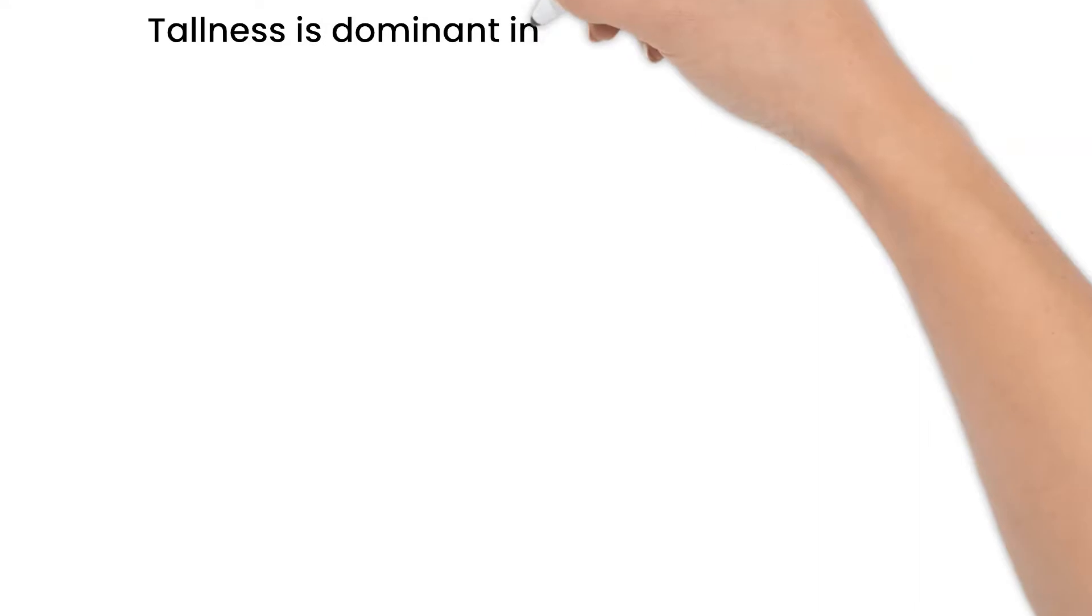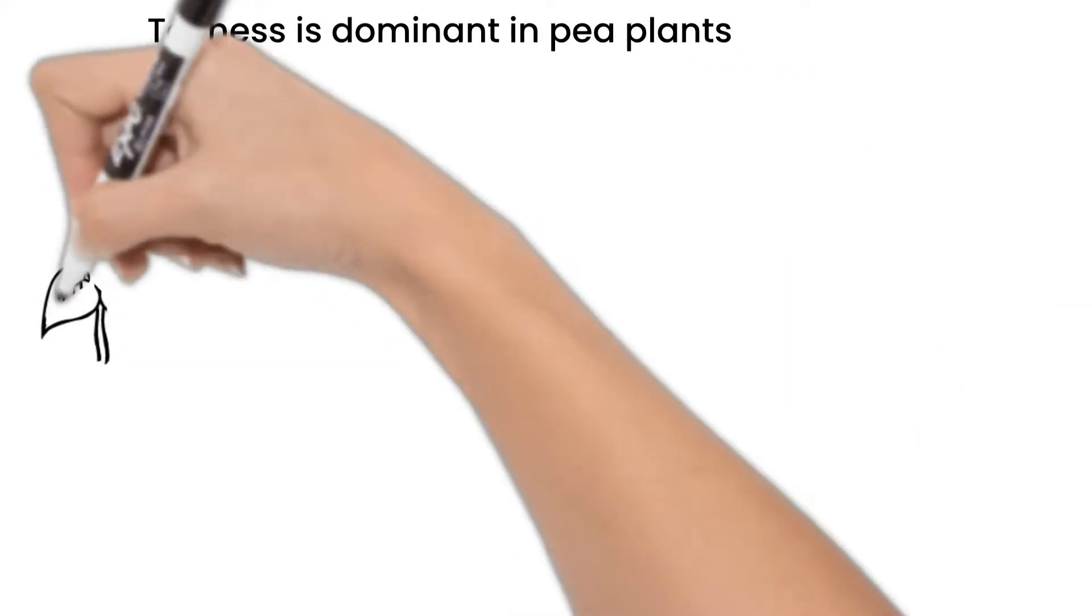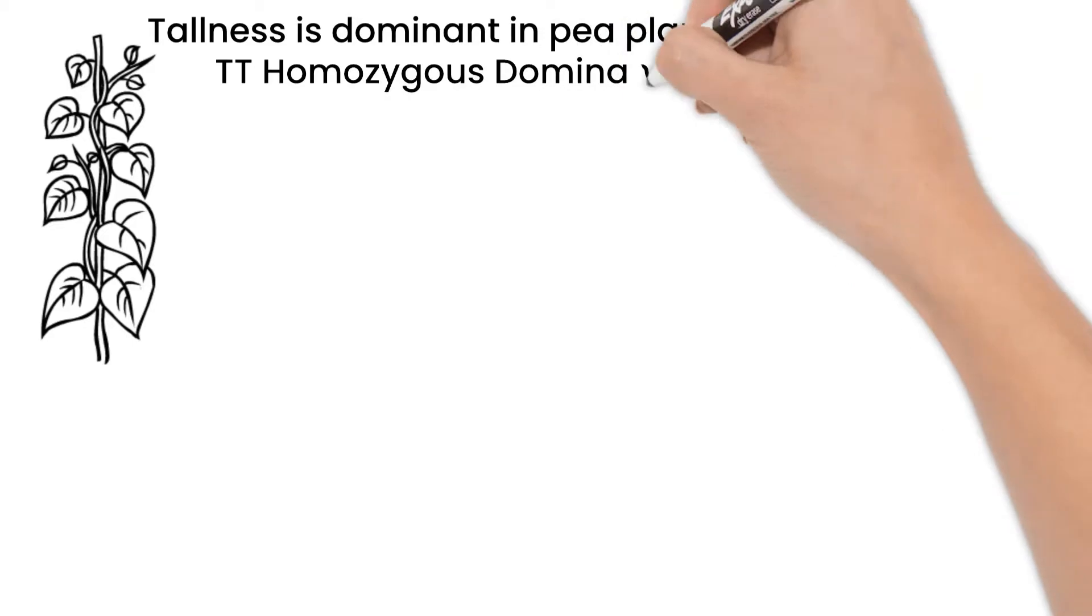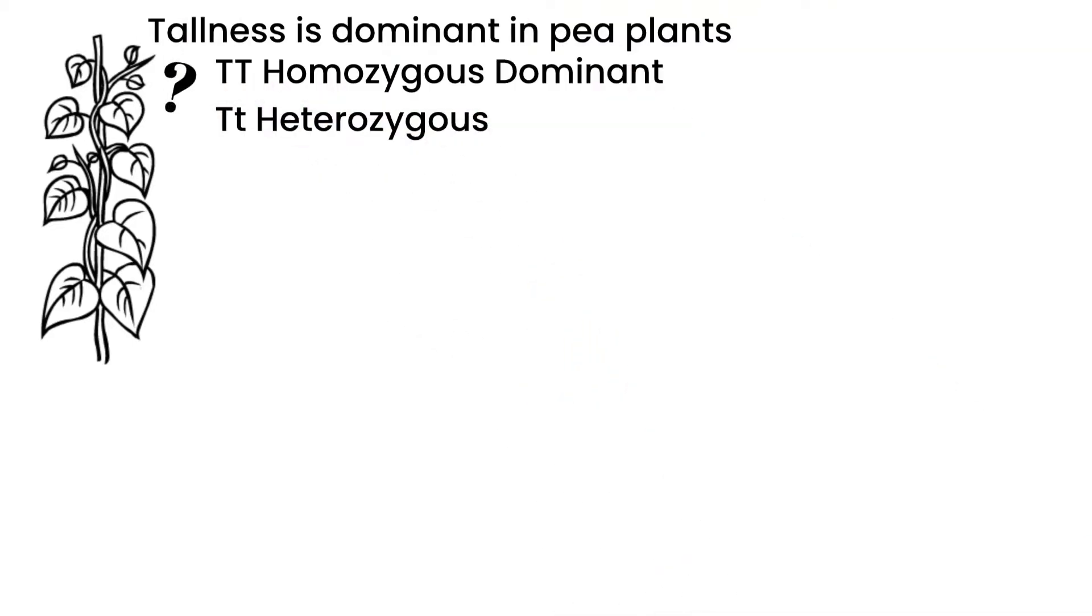Tallness is a dominant trait in pea plants. If you had a tall pea plant and did not know anything about the parent pea plants it came from, you wouldn't know if your pea plant's genotype was homozygous dominant or heterozygous, as both would have the tall phenotype.